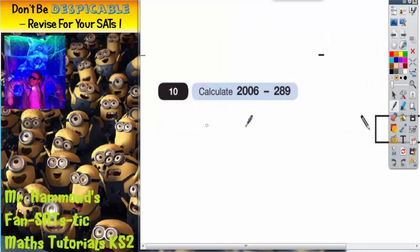Question 10 says calculate 2006 take away 289. This could be very simple if you use a column method and line everything up in columns. Obviously we're going to put the biggest number on top, so we've got